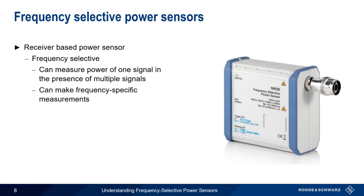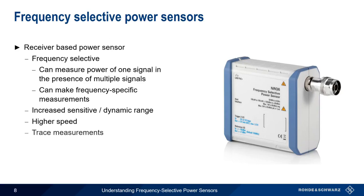In addition, these power sensors offer improvements in both sensitivity and dynamic range, as well as much higher measurement speed. And like a wideband power sensor, a receiver-based power sensor can also support power versus time, or trace measurements. Let's look at some of these features in a bit more detail.